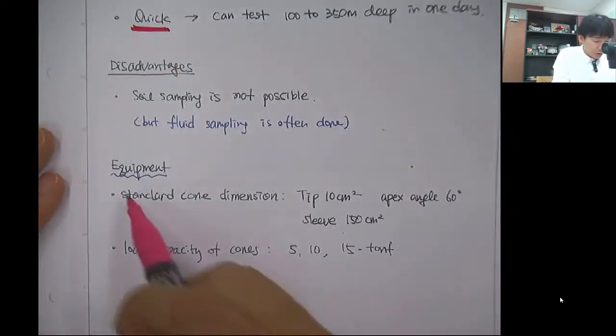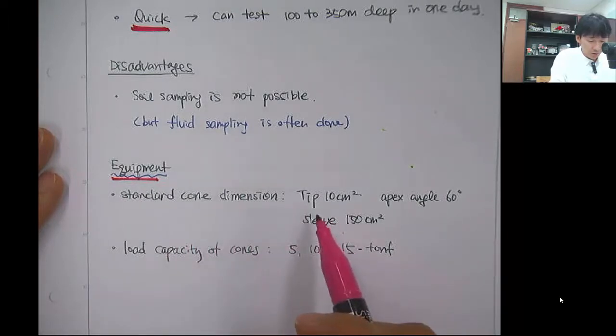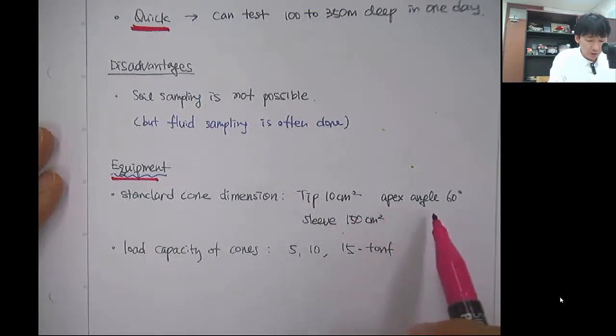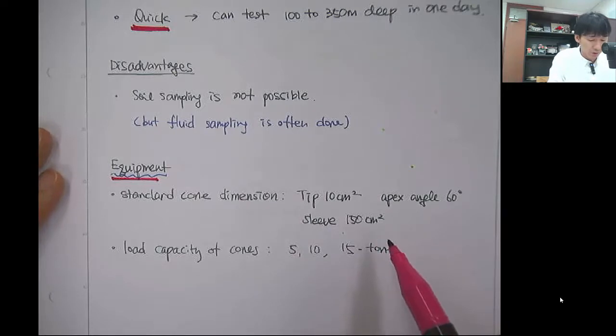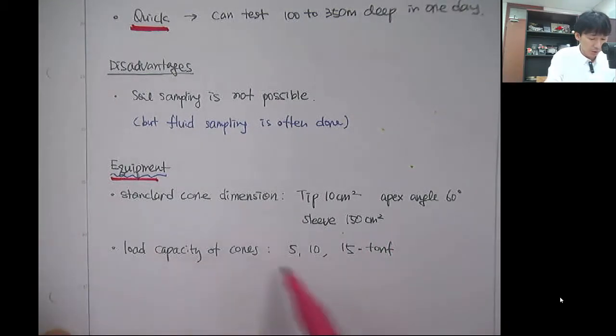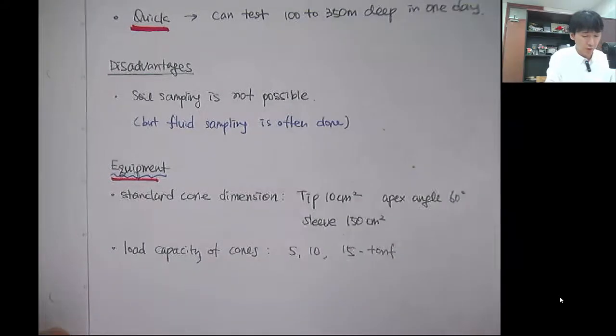The equipment has standard cone dimensions: 10 square centimeter tip area, apex angle is 60 degrees, and the sleeve has area of 150 square centimeters. Load capacity of the cone is 5, 10, 15 ton.